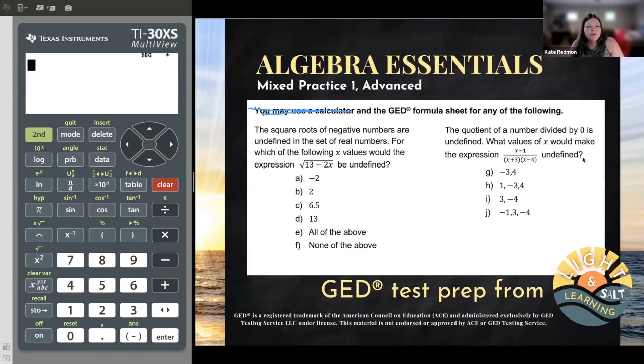So first one says the square roots of negative numbers are undefined in the set of real numbers. And basically what that means is if I tried to take the square root of a negative number, I'm not going to get a real answer. That's the real deal. You can't take the square root of a negative, at least with the numbers that we know right now.